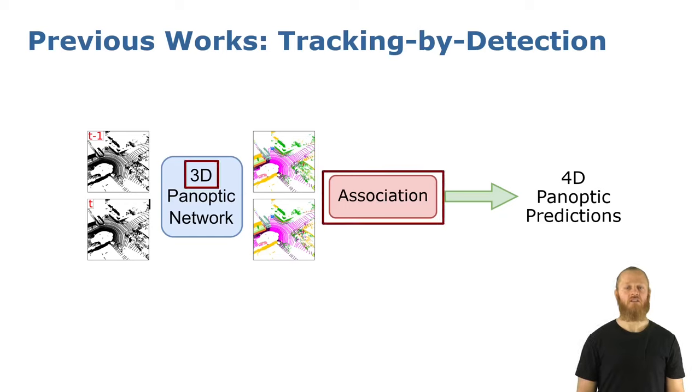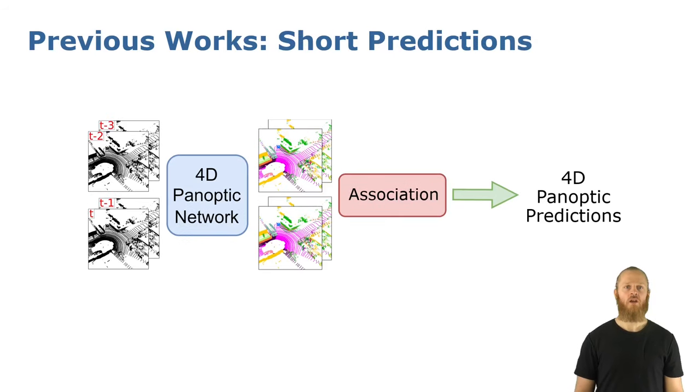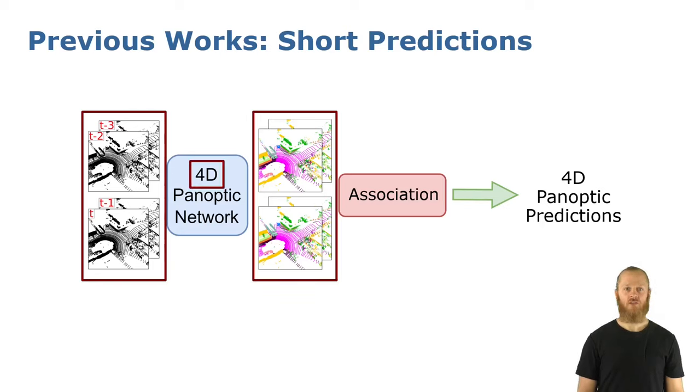Other approaches aggregate input scans using the vehicle poses to compensate for the ego motion, and then use clustering to obtain 4D prediction for these short sequences of two or three scans, which they later also associate together in a post-processing step.